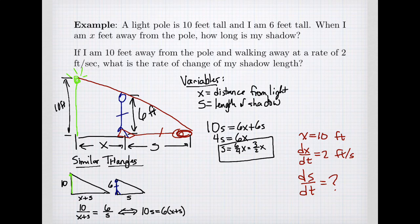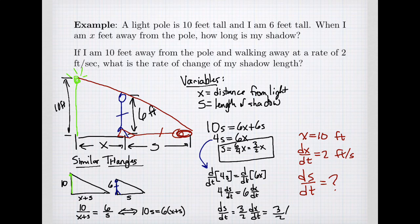We could use our formula that we just found, or we could use an earlier equation. I think it's actually easiest to use the rate equation coming from 4s equals 6x. If I take the derivative with respect to time of my equation, I get 4 ds/dt equals 6 times the rate of change of my walking. So ds/dt is 3 halves times how fast I'm walking. Notice that my distance away from the light didn't matter. It's 3 halves times 2, so my shadow is growing at a rate of 3 feet per second.